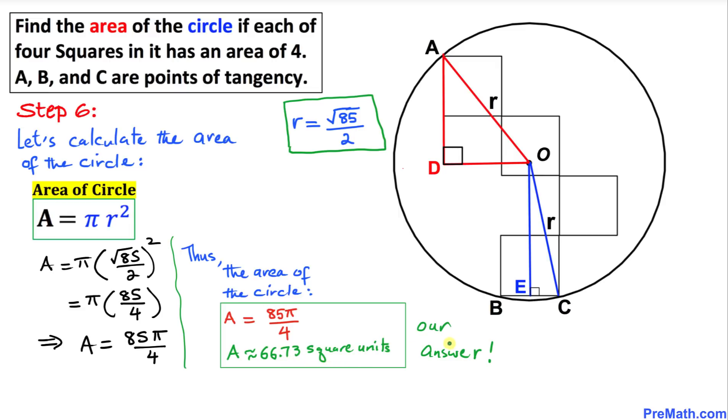Thus, the area of the circle turns out to be 85π/4, which is approximately equal to 66.73 square units. That's our final answer. Thanks for watching, and please don't forget to subscribe to my channel for more exciting videos. Bye!